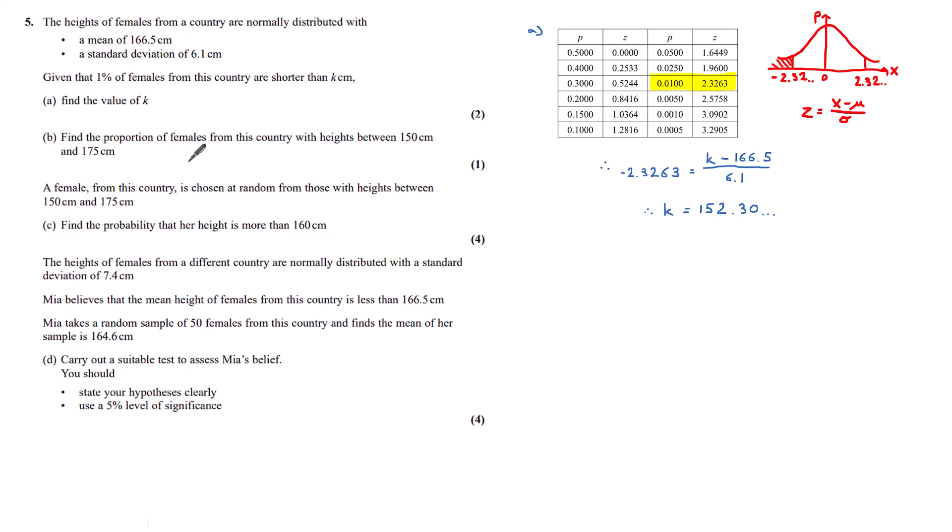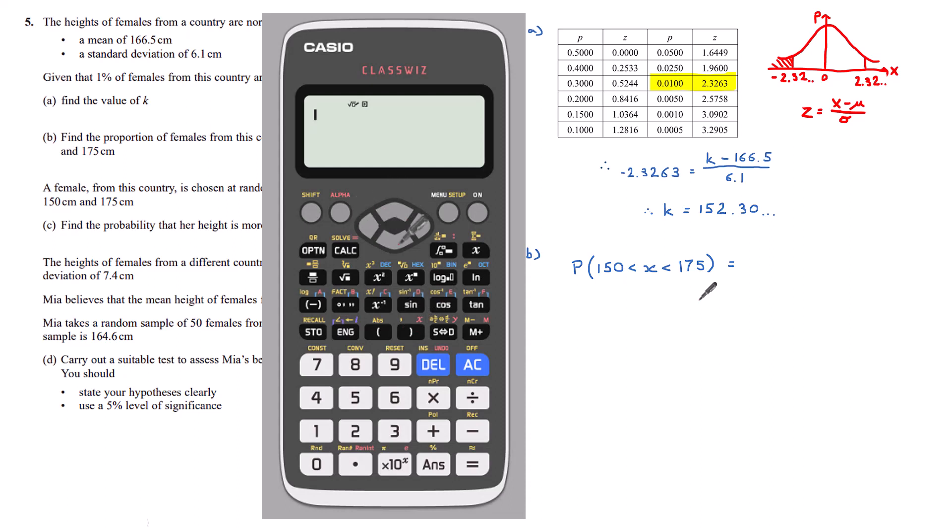Part B, find the proportion of females from this country with heights between 150 and 175 centimetres. So I want the probability between 150 and 175, which I can find on my calculator. Let's go to stats mode, and I want a normal cumulative distribution, so number 2.